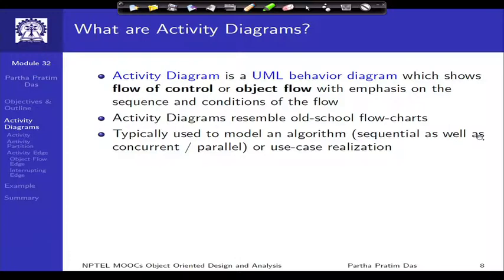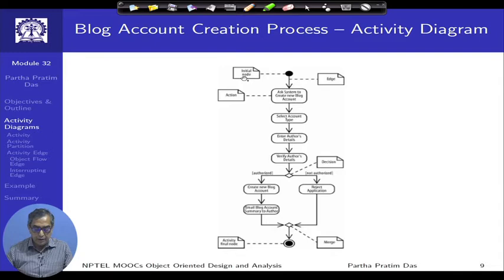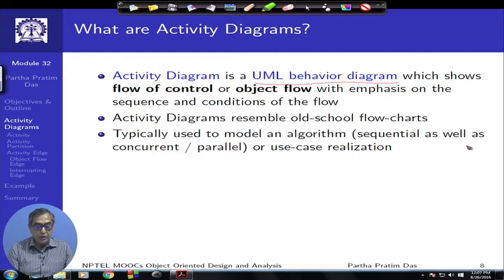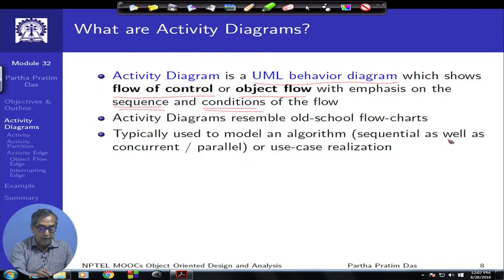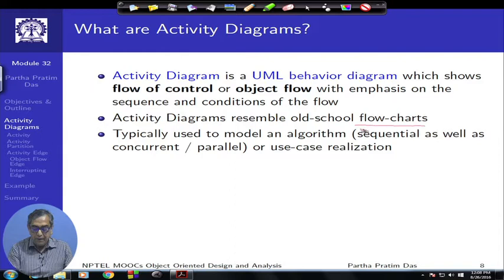The activity diagram is a UML behavioral diagram. It shows the flow of control or object flow, emphasizing the sequence and conditions of flow. You will find that a large part of the activity diagram actually looks like what we earlier called the flowchart — they are refinements or advancements on the flowchart representation used as a model to represent certain logic.